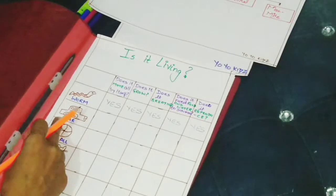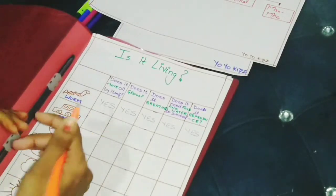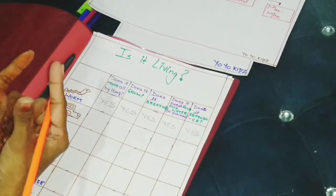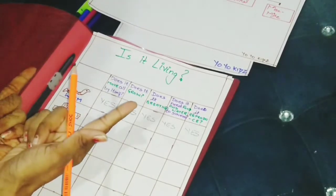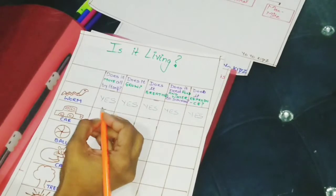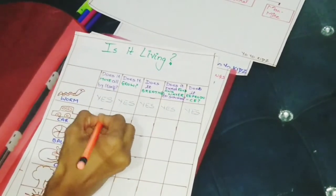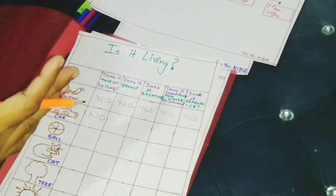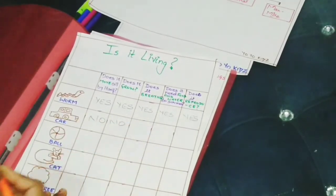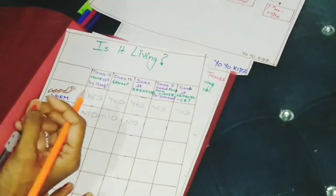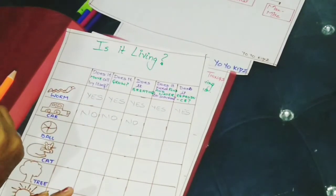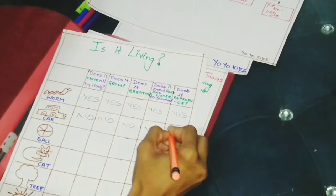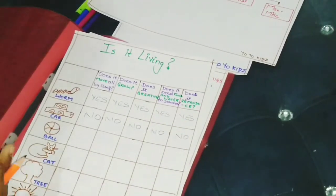Now next is a car. Does it move all by itself? Can it walk? No. Either we drive it, or the toy car you have, you operate it with a remote. It doesn't move by itself. It means it is a non-living thing. Does it move? So answer is no. Does it grow? Does its size increase? Size remains the same. No. Does it breathe? No. Does it need water and food? Does the car eat? No. Does it reproduce? No. So car is a non-living thing.